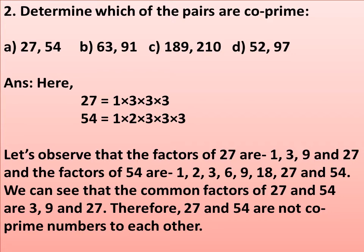We can see that the common factors of 27 and 54 are 3, 9, and 27. Since co-prime numbers require the HCF to be 1, but here the HCF is not 1 — there are three common factors: 3, 9, and 27. Therefore, 27 and 54 are not co-prime numbers to each other.